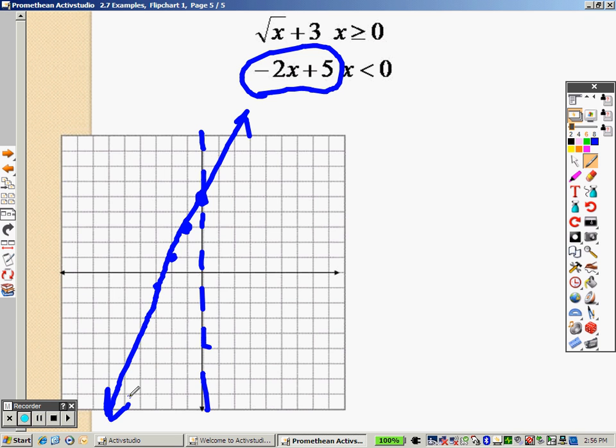However, I only want that line when that line is less than 0. So only when it's less than 0. And because it's less than, right, and because it's less than, I make it an open hole. So I put an open hole there.